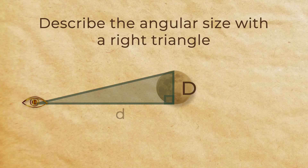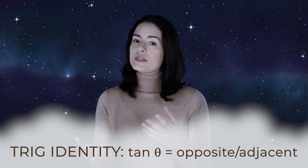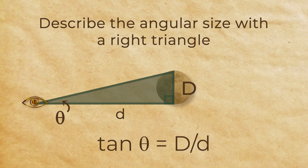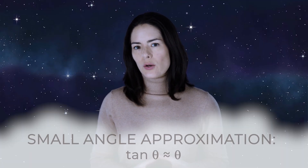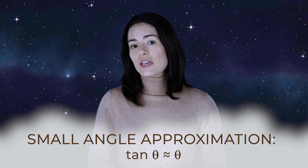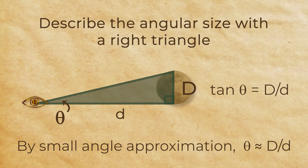But remember, its actual size hasn't changed. In order to determine the angular size, we can use a little trigonometry to describe this triangular arrangement. The diameter is capital D. Lowercase d is the distance to the object. And theta is the angle. For a right triangle, the tangent of an angle equals the opposite side divided by the adjacent side. So tangent of theta equals D over d. If theta is a small angle measured in radians, we can use the small angle approximation, whereby tangent of theta is approximately theta. That means theta approximately equals D over d.